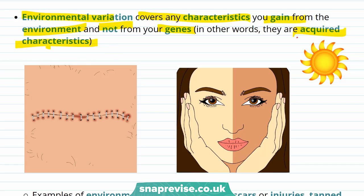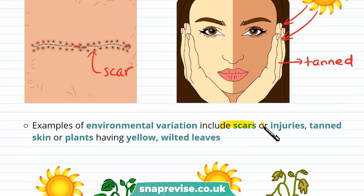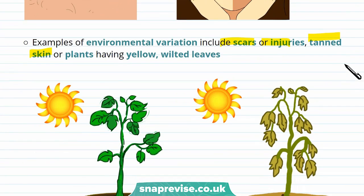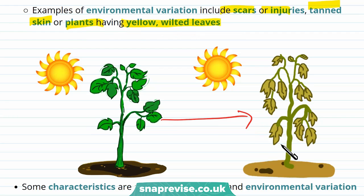For example, if a tiger scratches a person, this person might get a scar. If it's really sunny, someone might become tanned. Plants can also have environmental variation, including having yellow and wilted leaves, which happens if the plant loses too much water.